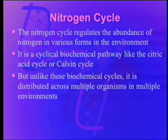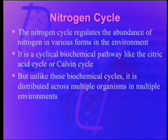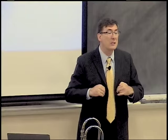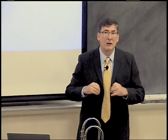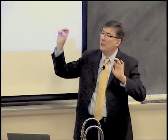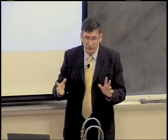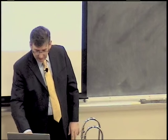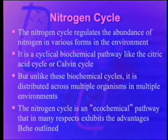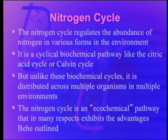The nitrogen cycle is a cyclical biochemical pathway like the citric acid cycle or the Calvin cycle, for those who know a little bit about these biochemical pathways. But unlike these biochemical cycles, it's distributed across multiple organisms in multiple environments. So instead of having all the bits and pieces of the nitrogen cycle inside you, those various steps in the cycle are distributed across bacteria and plants and all sorts of things.